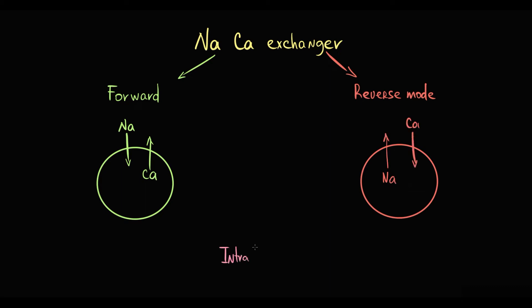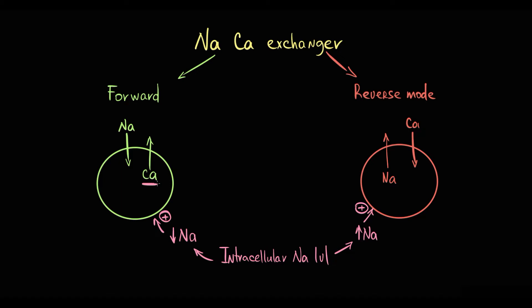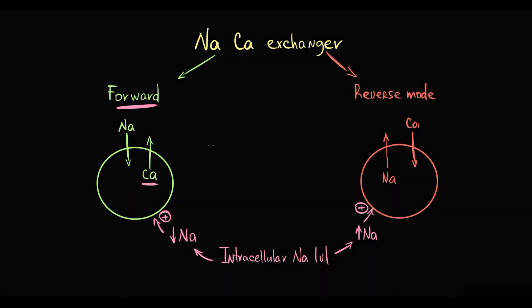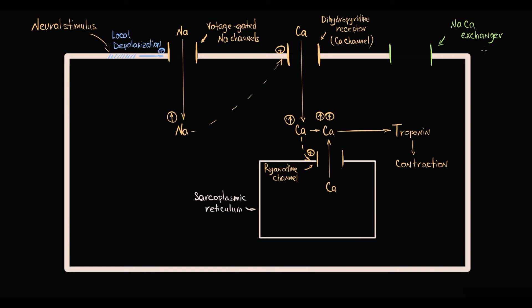Which mode the exchanger operates in depends on intracellular sodium level. Low intracellular sodium induces forward mode, and high intracellular sodium induces reverse mode. To decrease calcium level inside the cell, the sodium-calcium exchanger must work in forward mode. Because sodium inhibits forward mode, forward mode can be induced only by decreasing intracellular sodium level.